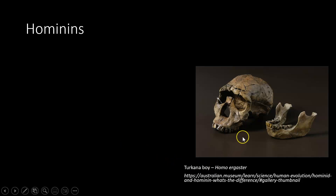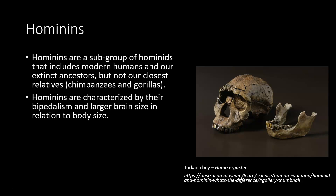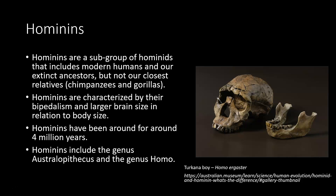This is Turkana Boy — one of my favorite fossils for many reasons. Hominins include a subgroup of hominids. So all hominins are hominids, but not all hominids are hominins. Hominins include modern humans and our extinct ancestors, but not our current closest relatives like chimpanzees and gorillas. Bipedalism — not just the ability, but actually bipedal, getting around on two feet. Larger brain size in relation to body size, and hominins have been around for about four million years. Hominins include the genus Australopithecus — like Lucy, Australopithecus afarensis — and the genus Homo: Homo sapiens, Homo neanderthalensis. We're all hominins as well.